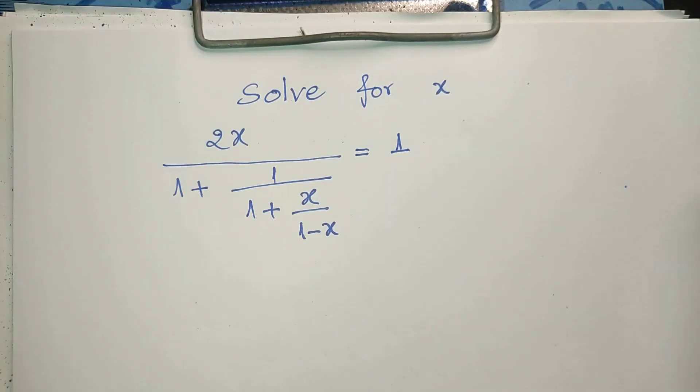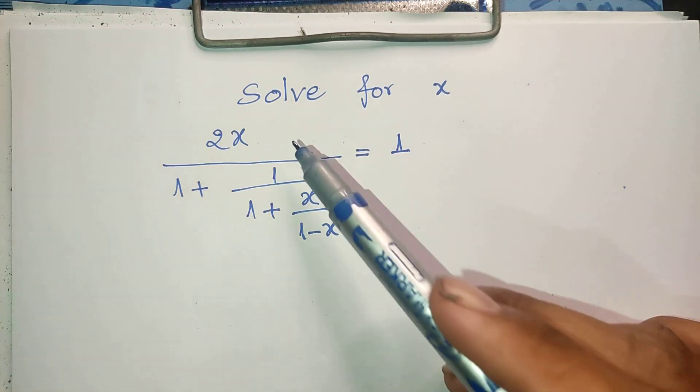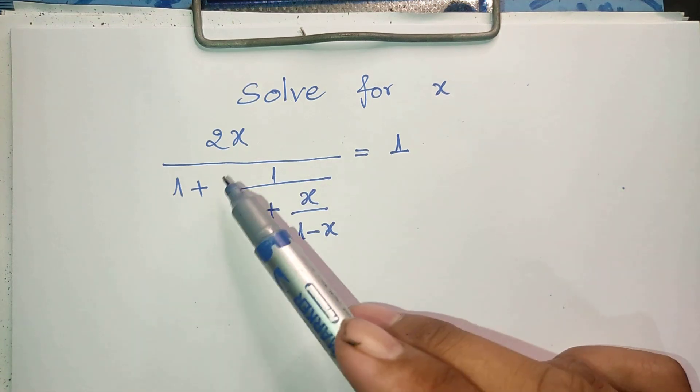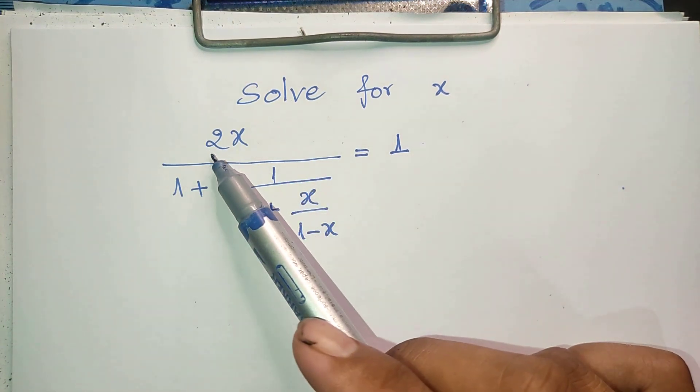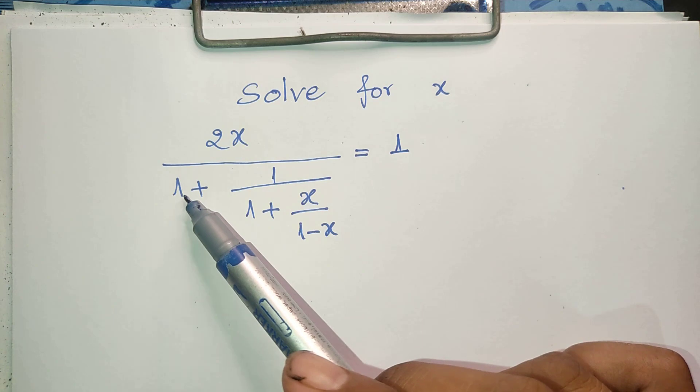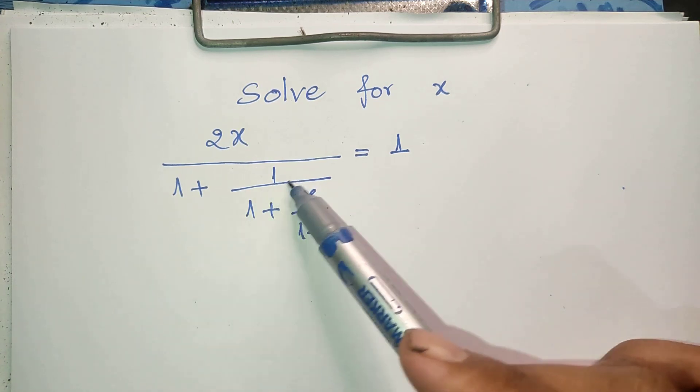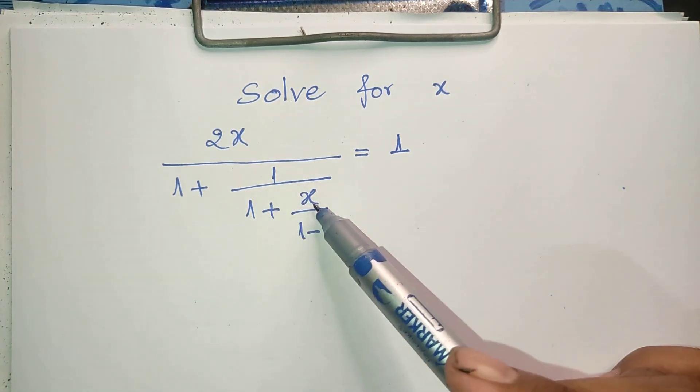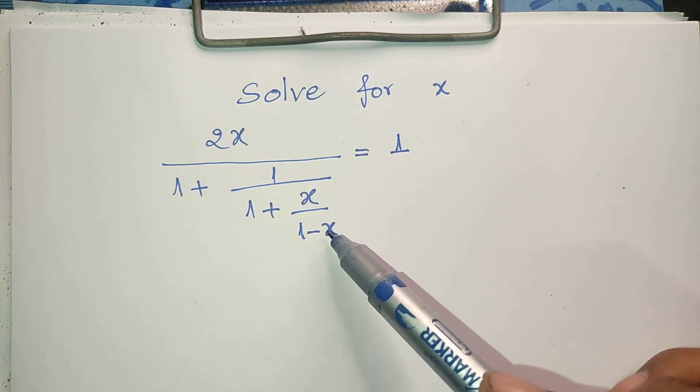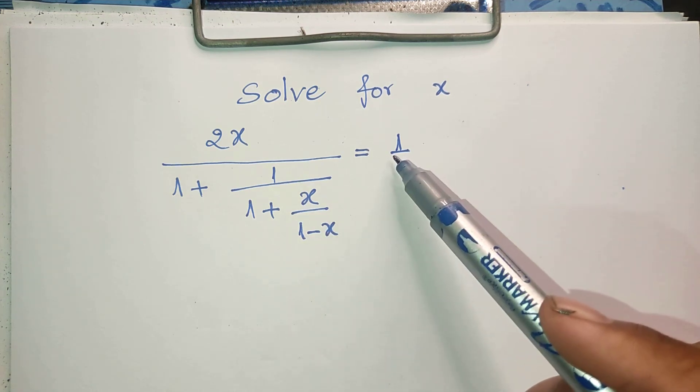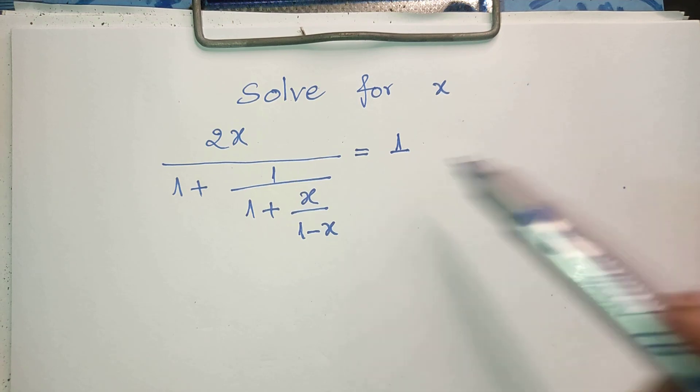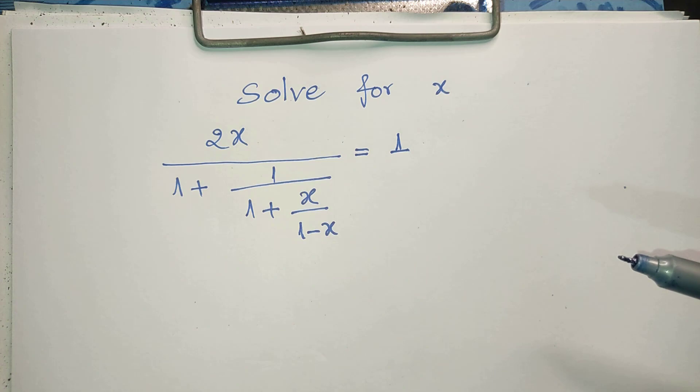Hello everyone, welcome to my YouTube channel. Today I have one exercise. We have the equation 2x divided by 1 plus 1 divided by 1 plus x divided by 1 minus x equals 1. Do you know how to solve this? If you know, please do it. What you do is already, please come back to watch my video.